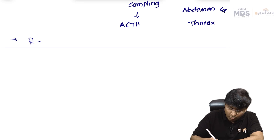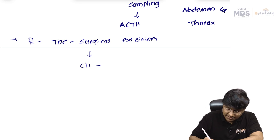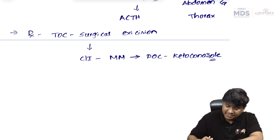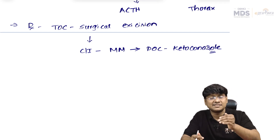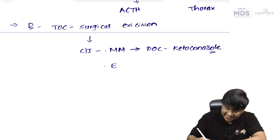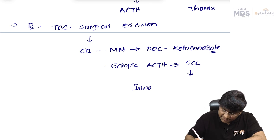The treatment of choice for Cushing's is surgical excision of the tumor. If there is a contraindication to surgery, medical management is used. The drug of choice is ketoconazole, an adrenal enzyme inhibitor that prevents steroid hormone synthesis. For ectopic ACTH from small cell carcinoma, the drugs to give are irinotecan plus cisplatin.